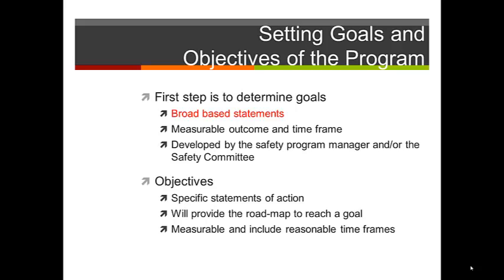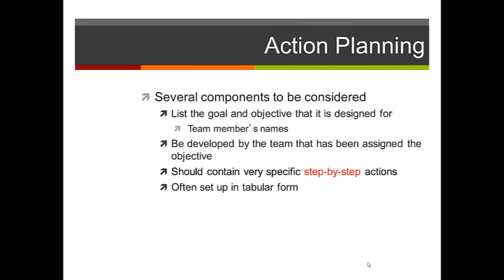Objectives are specific statements of action — they provide the road map to reach a goal. Objectives are measurable and include reasonable time frames. You can't say you'll reduce vehicle accidents in a week. A reasonable objective might be to measure vehicle accidents monthly with a goal of 1% improvement each month toward a 10% annual improvement.